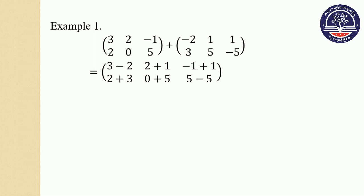The result line is: one, three, zero, five, five, zero. So that is the whole addition on the matrix.